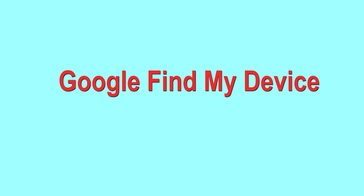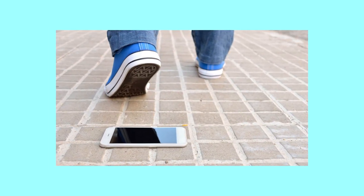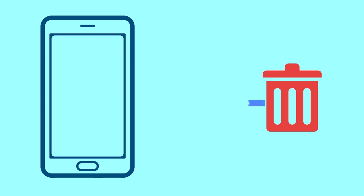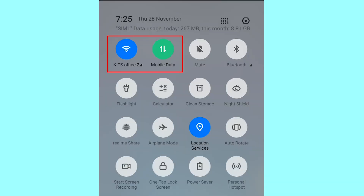Hard reset with Google Find My Device — this is the best method to reset your Android phone remotely. This method is useful when you lose your phone or are not able to access your mobile. This method also deletes all your Android phone data. After your device has been erased, you can't locate it. You can only use this method if you already added a Gmail account to your phone and have an active internet connection.